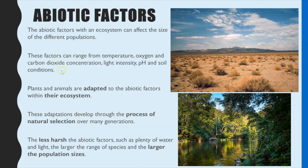The final point linked to abiotic factors is: the less harsh the abiotic factors — meaning you have plenty of all the conditions you need, such as plenty of water and light — that would mean that particular ecosystem is able to support a much larger range of species, and each species will be able to have a larger population size. I've got two images just to demonstrate that point.